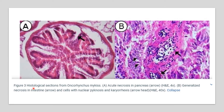A histological section from Oncorhynchus mykiss, or rainbow trout, is also shown. Panel A illustrates acute necrosis in the pancreas as indicated by arrows in H&E stain, and generalized necrosis in the intestine with cells showing nuclear pyknosis and karyorrhexis as shown in the arrowhead.